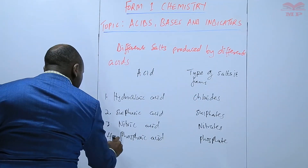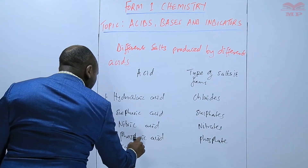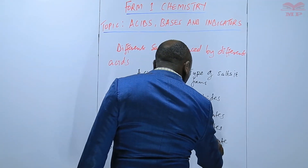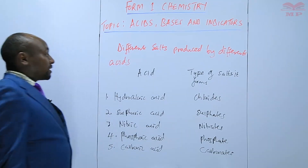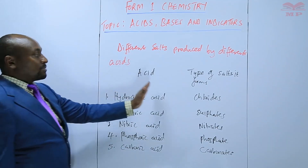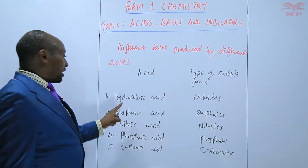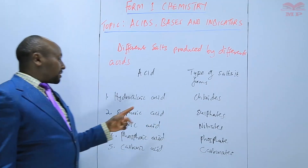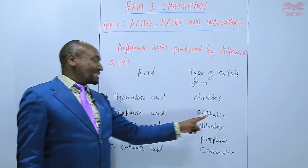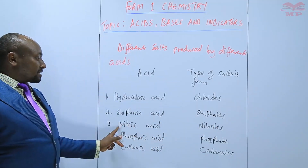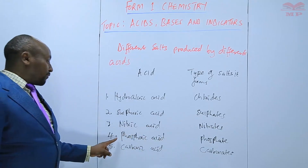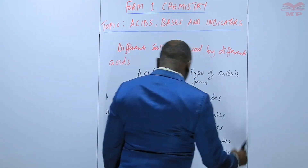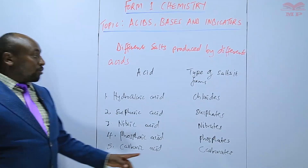And lastly, carbonic acid forms salts called carbonates. So to summarize: hydrochloric acid forms chlorides, sulfuric acid forms sulfates, nitric acid forms nitrates, phosphoric acid forms phosphates, and carbonic acid forms carbonates.